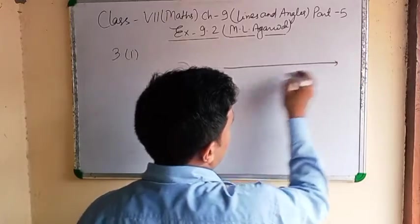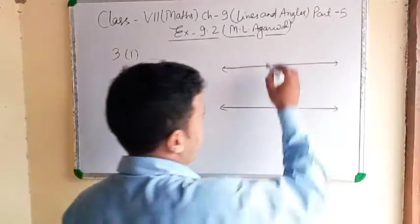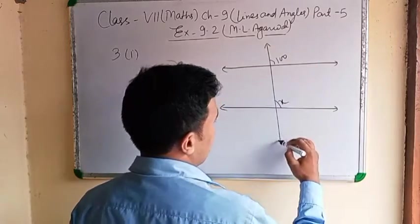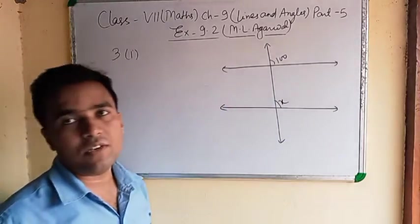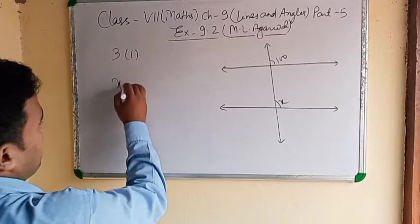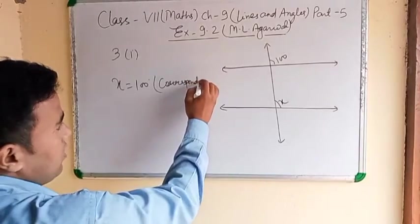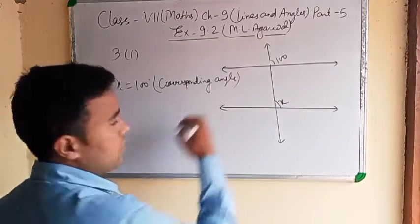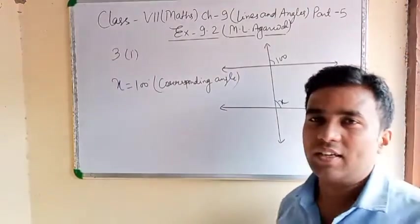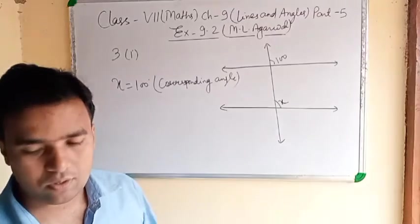The figure is given. It shows 100 degrees. The question asks to find the value. I told you about corresponding angles — it means the unknown angle equals 100 degrees. It is a corresponding angle. The answer is: the unknown angle equals 100 degrees, because it is a corresponding angle.